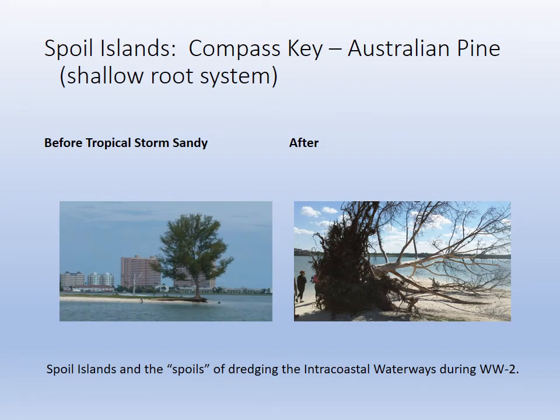Spoil islands — we talked about those. They're made by dredging out the Intracoastal. During World War II, we dredged out the Intracoastal to prevent German U-boats from bombing our trade ships, so we could have protected waterways from submarines. Now they're used for recreation, and all those dredged islands — our spoil islands — have undergone succession in their habitat for wildlife or as parks for people.